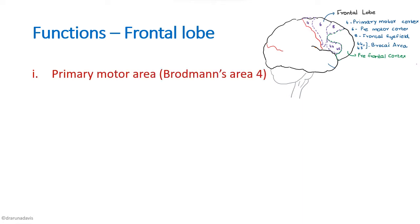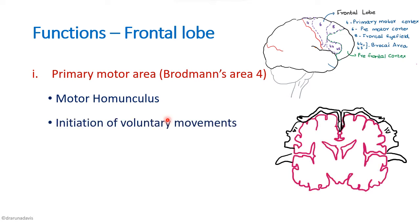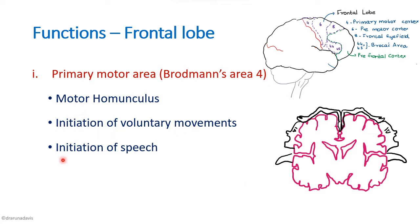The primary motor area is the main area responsible for motor functions, which is possible through the motor homunculus — the representation of different body parts on the primary motor area. It is arranged in an inverted fashion: legs at top, then trunk and hands, then face and tongue. The area of representation is directly proportional to the fineness of function, so fingers have more representation than the trunk. This area is primarily responsible for initiation of voluntary movements and initiation of speech.